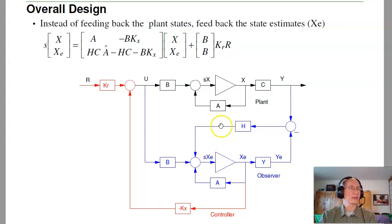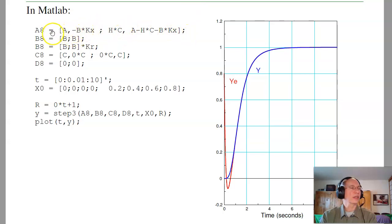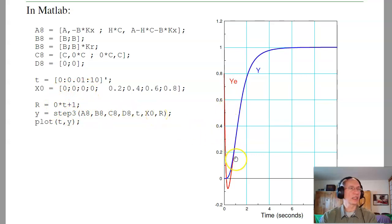Put the two together: the plant, the observer, and the controller. The closed-loop system becomes [A - BK_x, 0; HC, A - HC - BK_x], it's now eighth order. Throw that into MATLAB. I look at the plant output and the estimated plant output, run for 10 seconds, and give a difference in the initial state estimates and actual states. Taking the step response, the observer states very quickly converge to the plant states, and then the feedback controller kicks in and drives the output to 1.